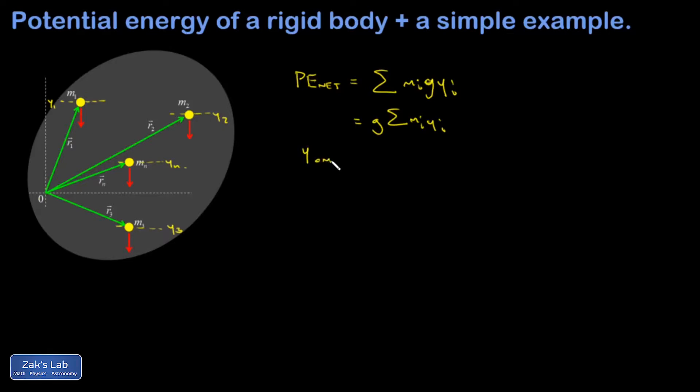So here's a little reminder. Y-coordinate of the center of mass is 1 over the total mass times the sum of all the Mi's multiplying the Yi's. Well, that means that the sum I'm looking at is M multiplied by the center of mass Y-coordinate.